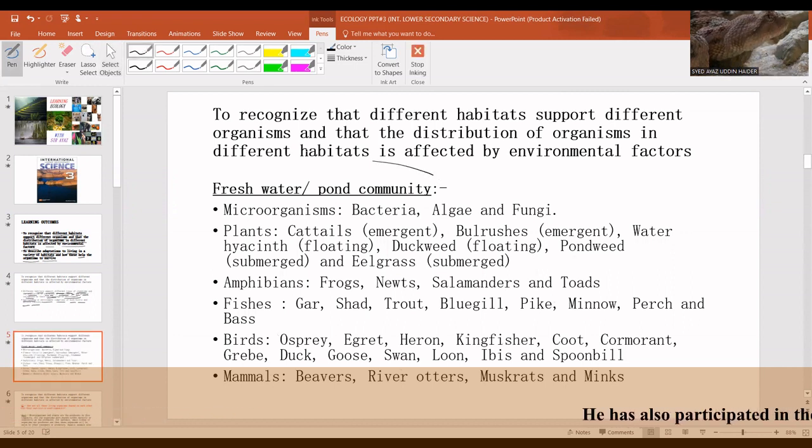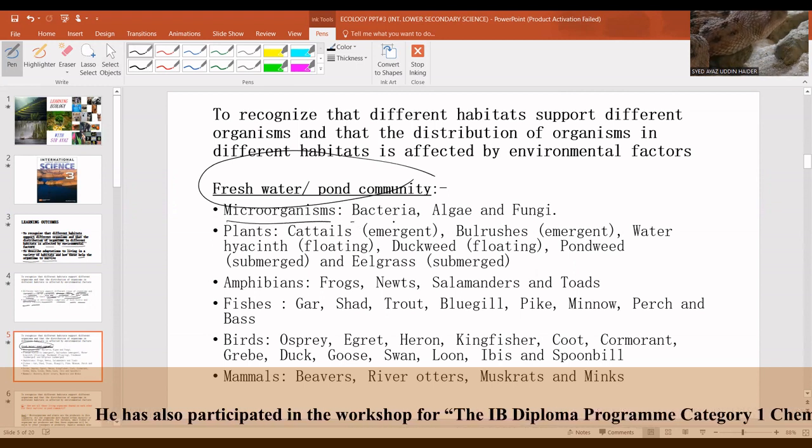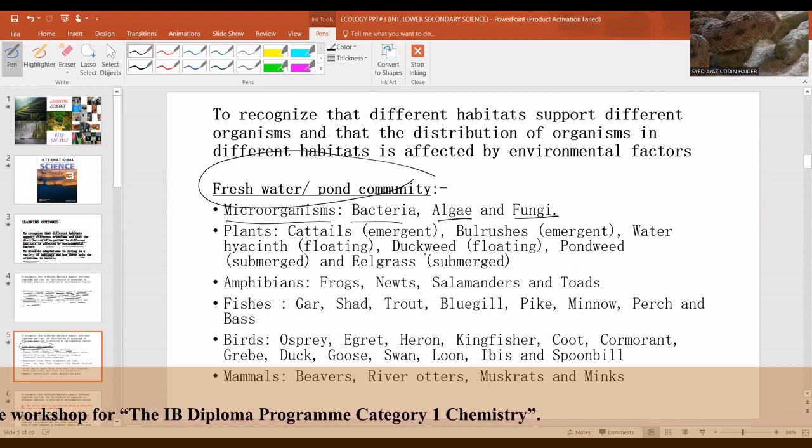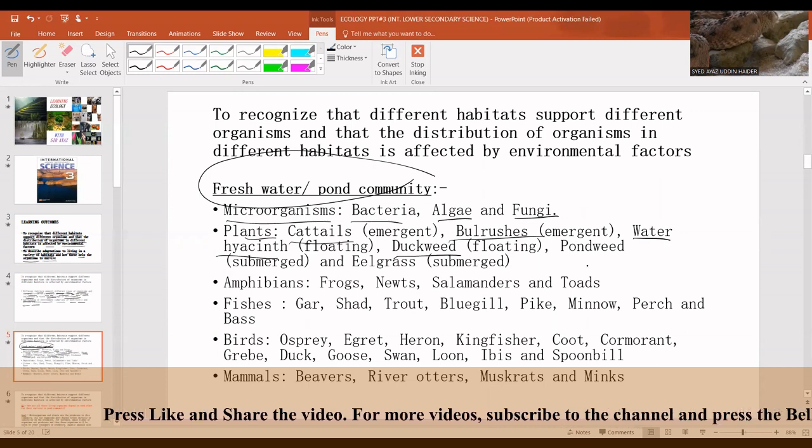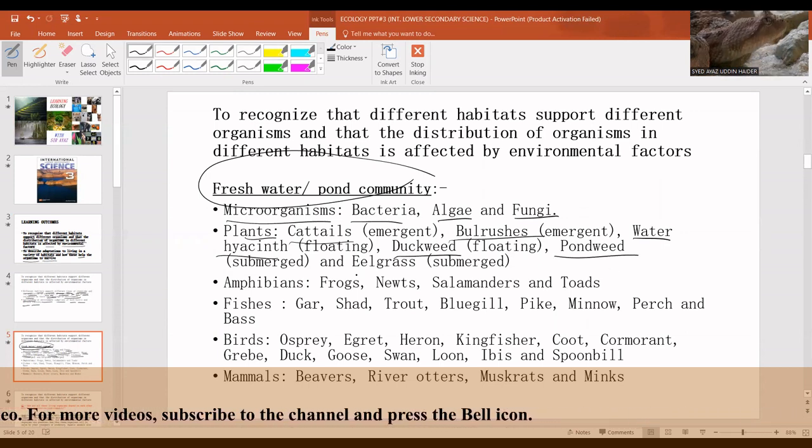This is a freshwater pond community. It comprises of microorganisms like bacteria, algae, and fungi. Plants like cattails, bulrushes, water hyacinth, duckweed, pondweed, and eelgrass.